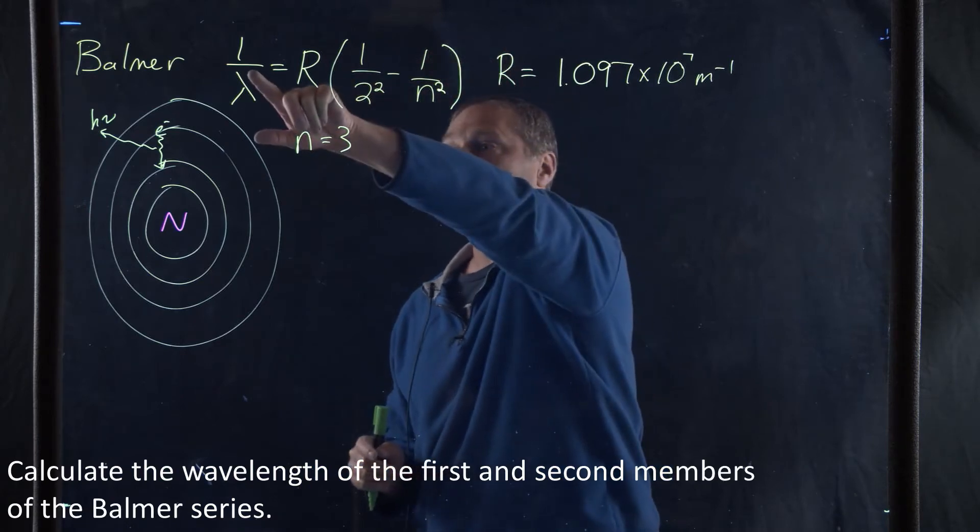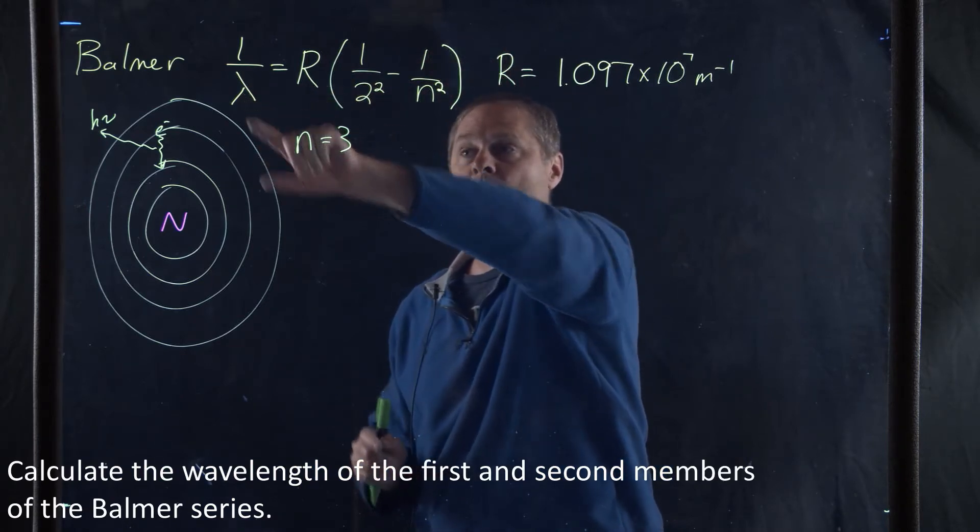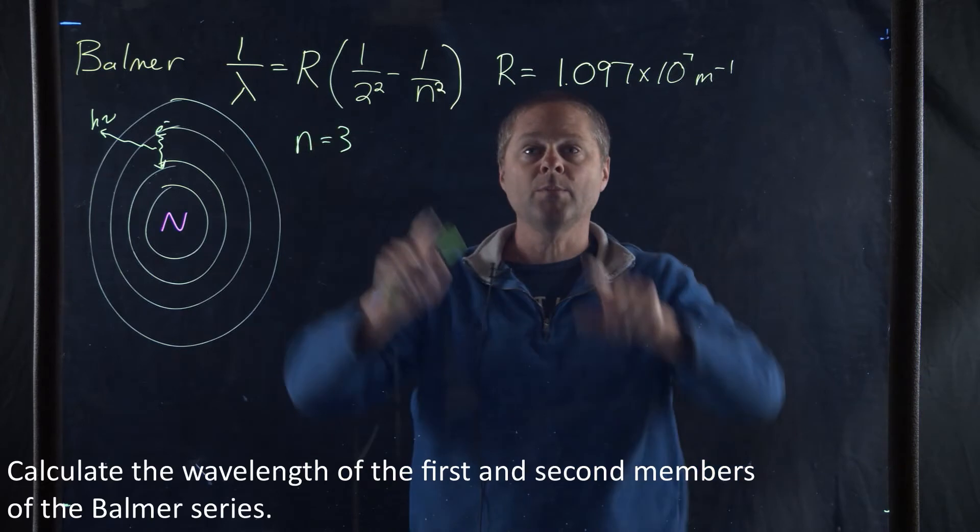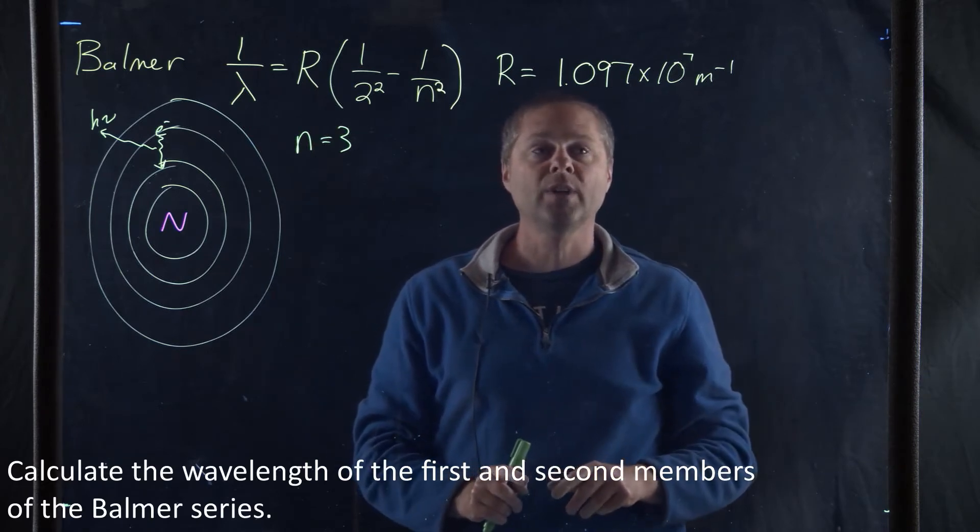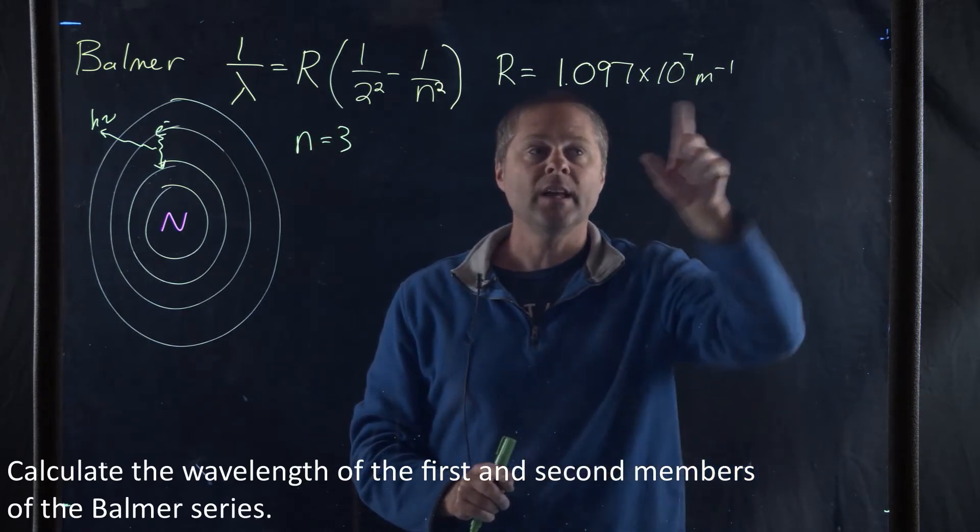And so in order to do that, we're going to use the following equation. Well, this is going to be the inverse of the wavelength. R is going to be the Rydberg constant, which is 1.097 times 10 to the 7th inverse meters.